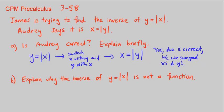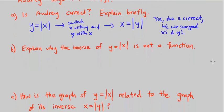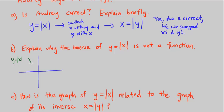Let's go on to part B. Explain why the inverse of the function y is equal to the absolute value of x is not a function. We can explain this quickly by just looking at the graph. Let me draw in green — y is equal to the absolute value of x looks like this.